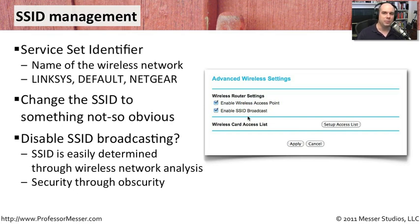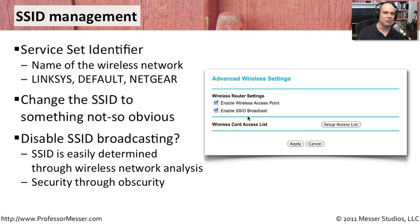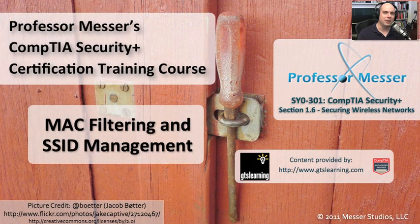But yet again, it's very easy with protocol analyzers to sniff the air and see what access points are out there. As soon as somebody connects, you're going to see the SSID — you can't hide all of the SSID information. So applying this is really security through obscurity, which of course is nothing to do with real security. Don't use this as your only method of adding extra security to your network — layer it on with all of the other things that you're doing.